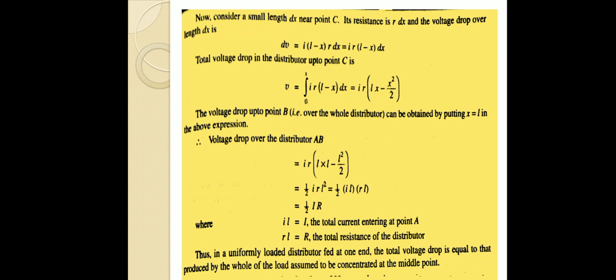Simplifying: IR into (L into L minus L squared by 2) gives one half IR L squared. Writing this as one half IL into RL, it becomes one half capital I capital R. Here IL equals capital I, the total current entering at point A, and RL equals capital R, the total resistance of the distributor. So in a uniformly loaded distributor fed at one end, the total voltage drop equals that produced by all the load assumed to be concentrated at the middle point.